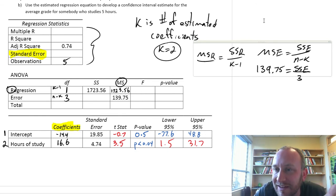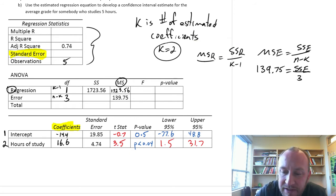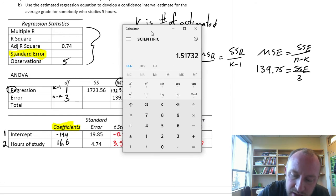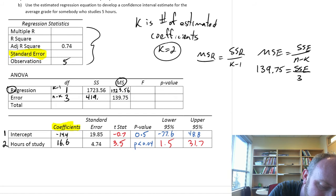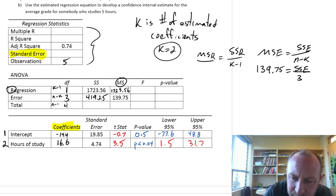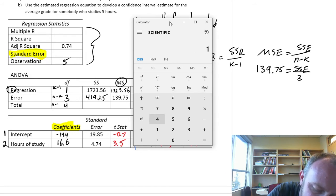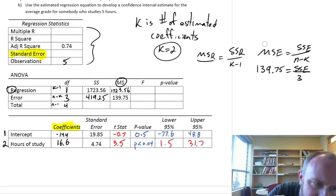And we have degrees of freedom is 3. So we just need to solve this for SSE. So that's just going to be 139.75 times 3. I'll just get my calculator out, but this is an easy one. So 139.75 times 3. 419.25. So this is 419.25. And then we can fill in for total. So this degrees of freedom, this is n minus 1, is 4. And sum of squares total, we just add up sum of squares regression and error. So this is 1723.56 plus 419.25. So 2142.8.